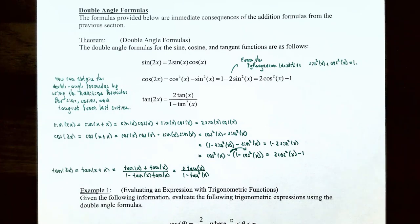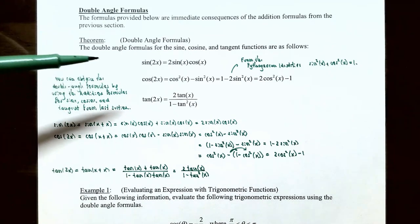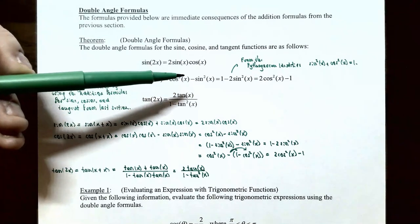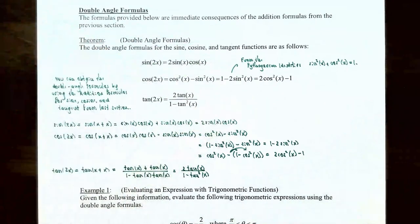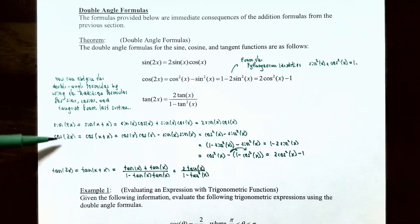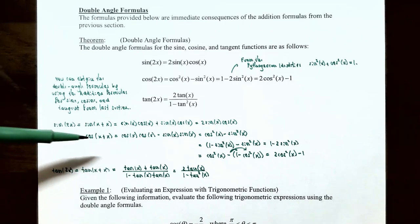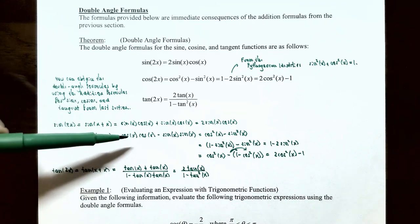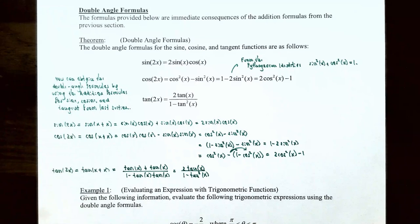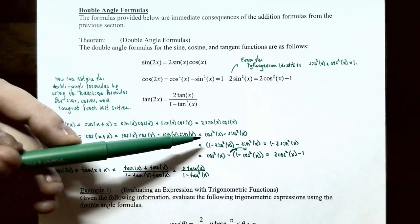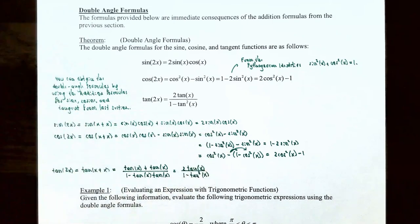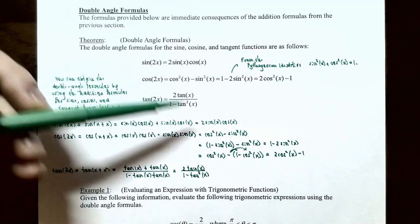The double angle formula for the cosine function has three different versions. Cosine of 2x equals cosine squared x minus sine squared x. This is obtained from the addition formula: cosine of x plus x equals cosine x times cosine x minus sine x times sine x, giving cosine squared x minus sine squared x as the first version.